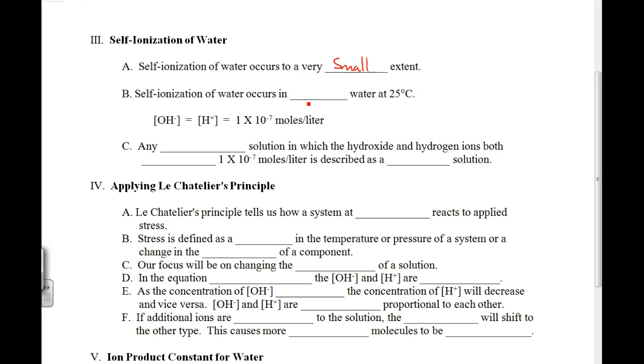Self-ionization of water occurs in pure water at 25 degrees Celsius to this extent. This is an equation that you have to know. It says the concentration of hydroxide is equal to the concentration of hydronium, which is equal to 1 times 10 to the negative 7 moles per liter.